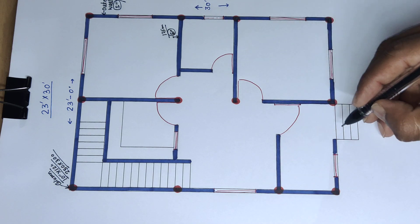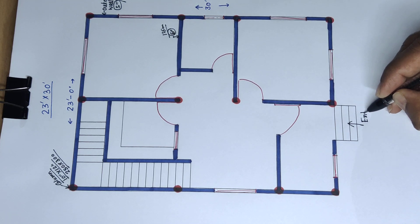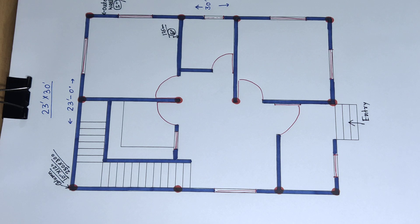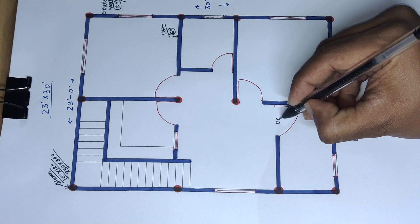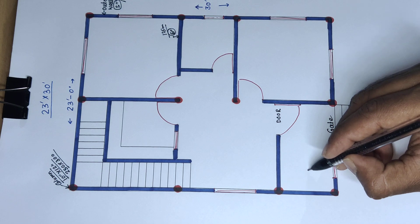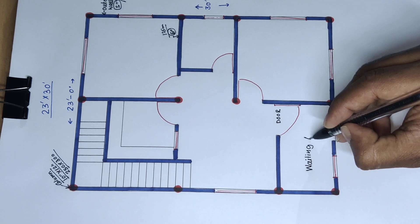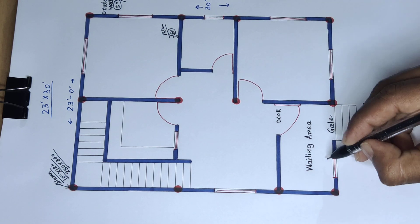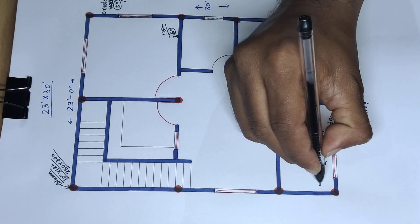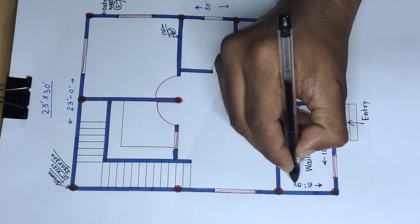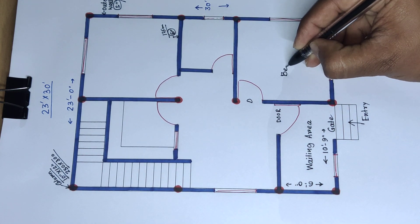Now starting the plan — this is the entry and this is the gate and door. This is the waiting area. Waiting area distance is 10 feet 9 inch and 6 feet 0 inch. And this door leads to the bedroom.